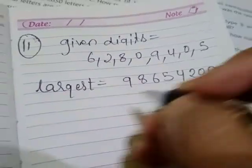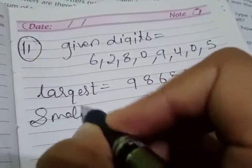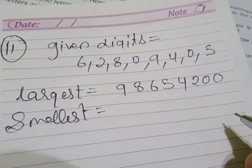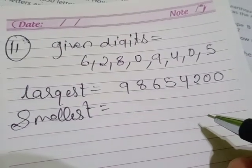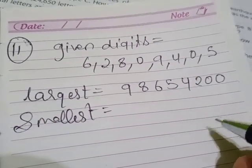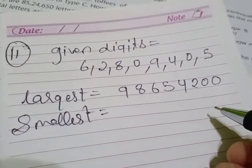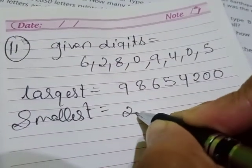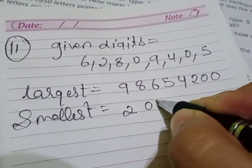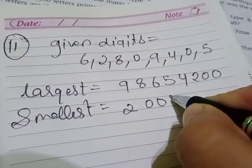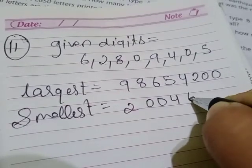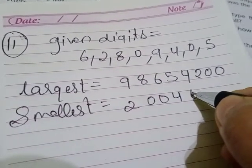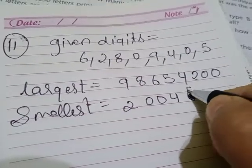Now I'll write the smallest number. To write the smallest number, we arrange from smallest to biggest. So first I'll write 2, then both zeros, then 4, then 5.